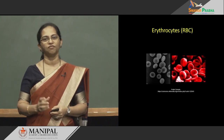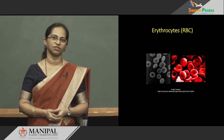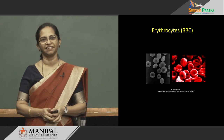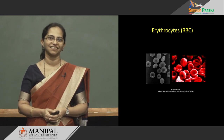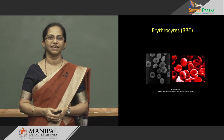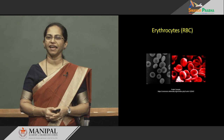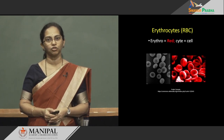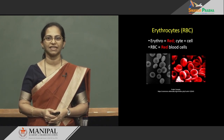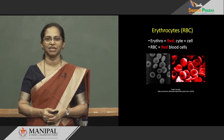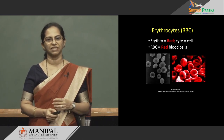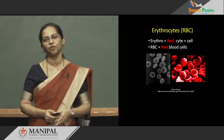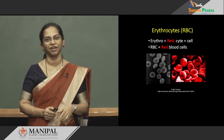Let us begin with the journey of understanding the erythrocyte, or red blood cell. It is red because it contains a protein which imparts red colour — that protein is none other than hemoglobin. The name 'erythro' means red and 'cyte' means cell, so erythrocyte simply means a red blood cell. Whether we call it erythrocyte or RBC, let us now move forward to understand what happens in the life span of an RBC.